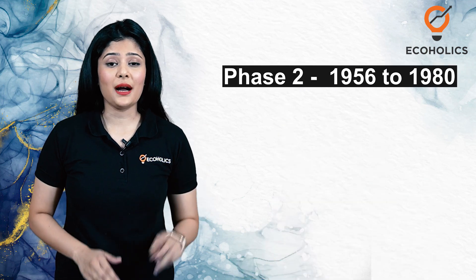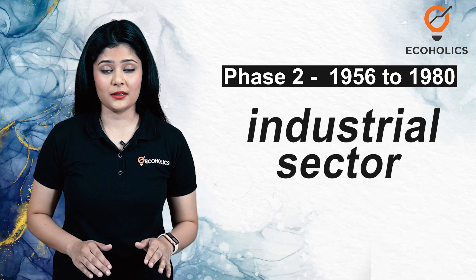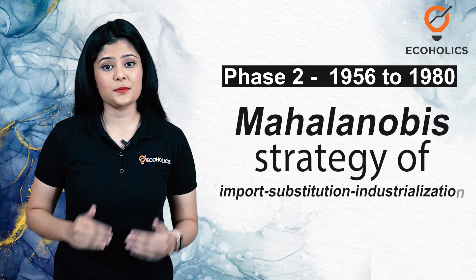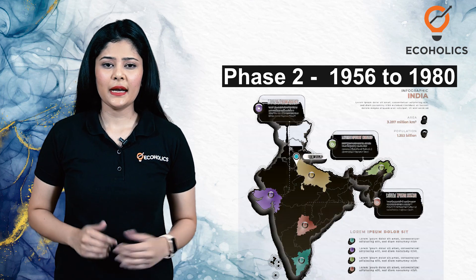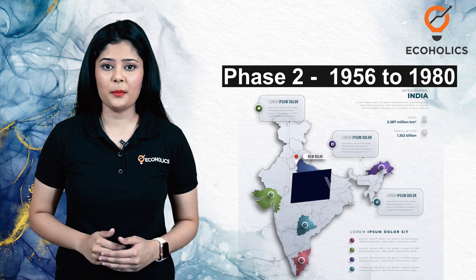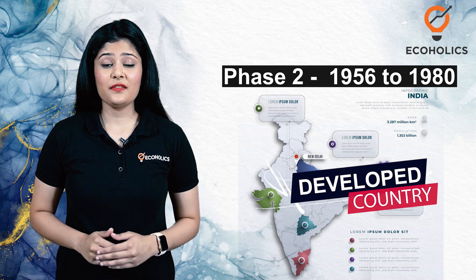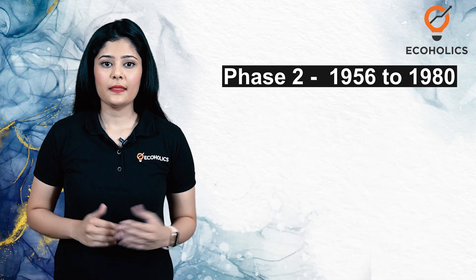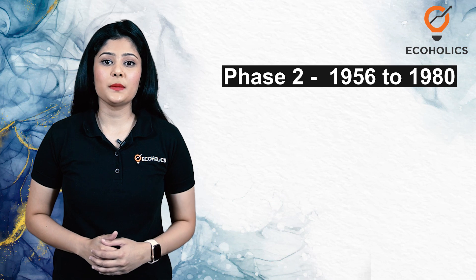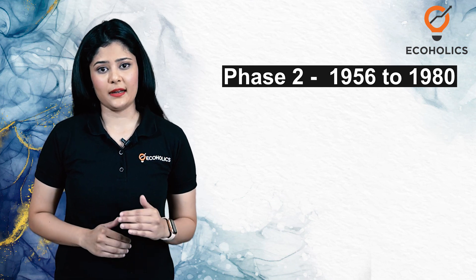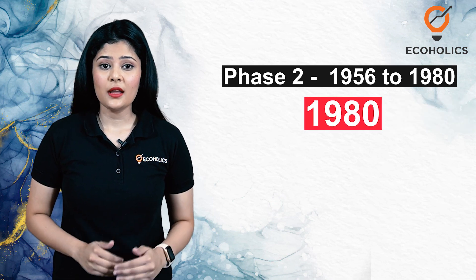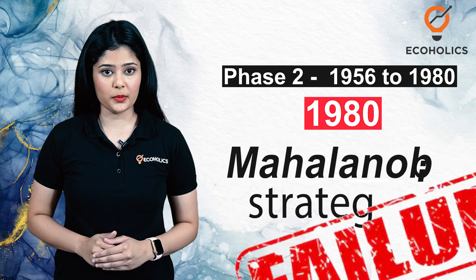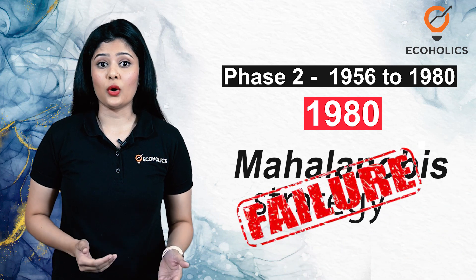Phase 2 marked a drastic change for the industrial sector with the advent of Mahalanobis's strategy of import substitution industrialization. India wanted to achieve the tag of a developed country and invested a huge amount of capital into building heavy industries. This pattern of investment continued but saw a steady decline. By 1980, policy makers had realized the shortcomings of Mahalanobis's strategy and it was time to move on.